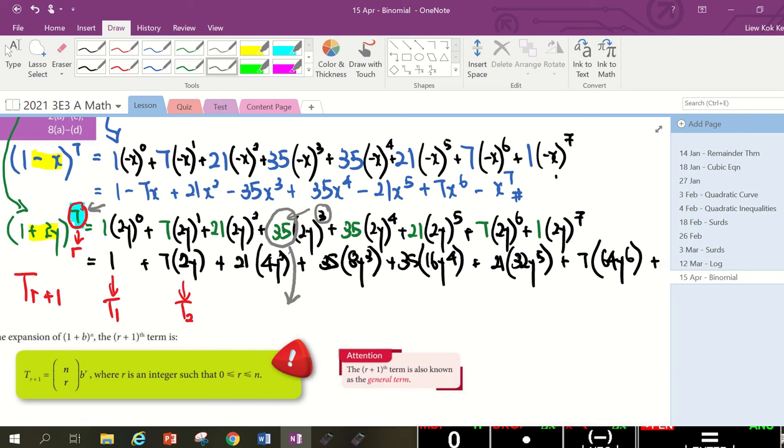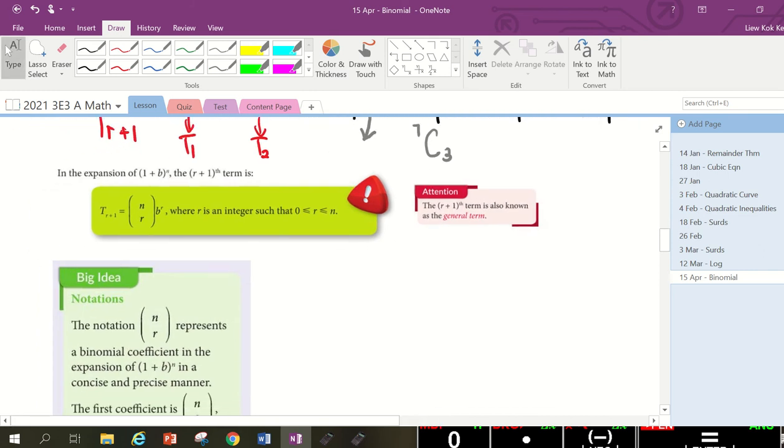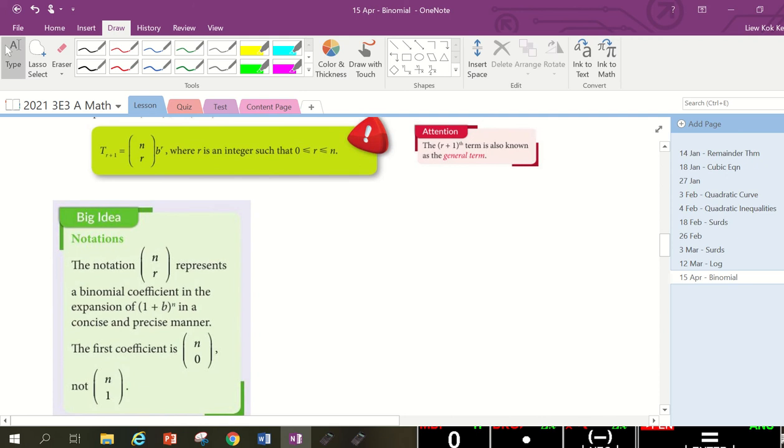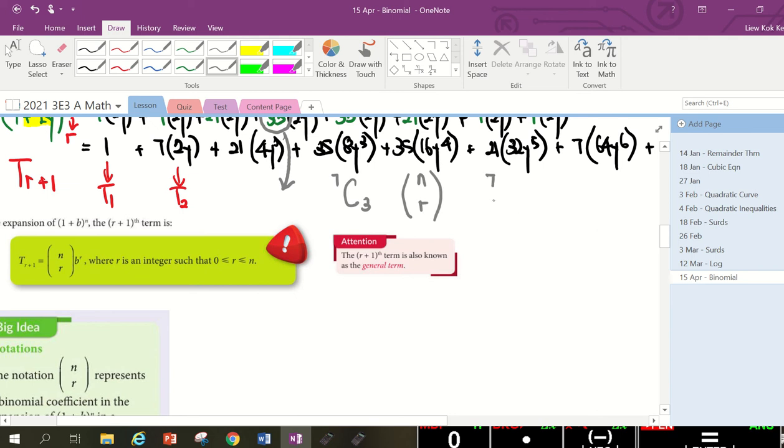So, doesn't matter. Don't worry about the term. Just know this is power 3. So long as power 3 is 7 choose 3. You can see in your textbook. They will write it this way also. 7 choose 3 or known as n choose r. Power 7 choose the third one.